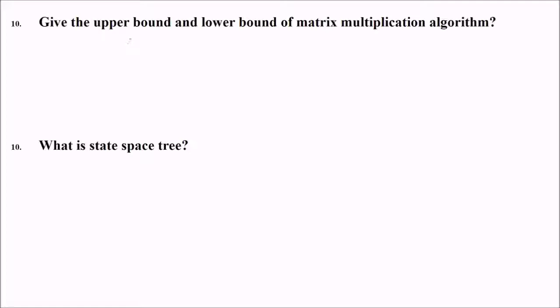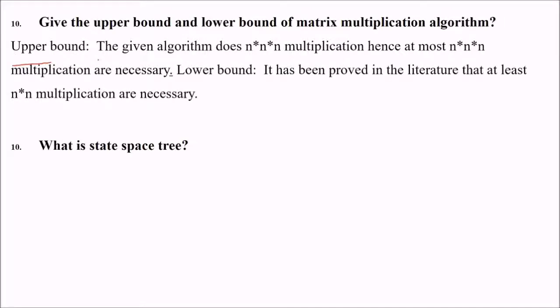Give the upper bound and lower bound of matrix multiplication algorithm. Upper bound: the given algorithm does have n into n into n multiplication, at most n cube multiplications which are necessary. Lower bound: it can be proved that at least n by n multiplications are necessary.